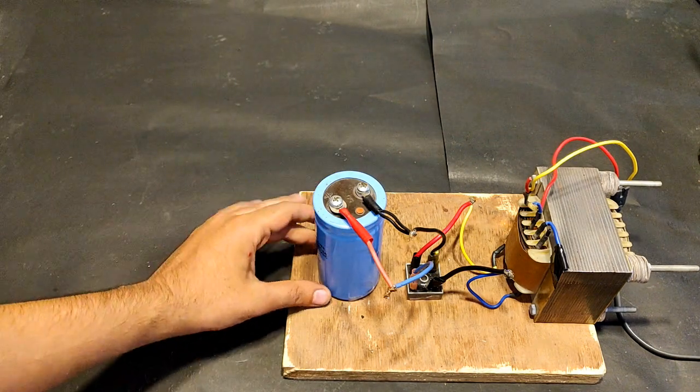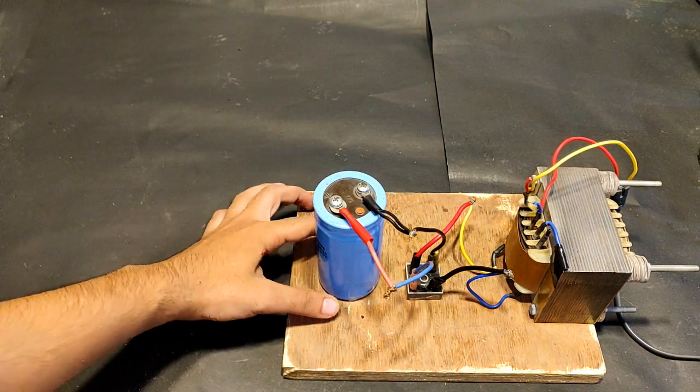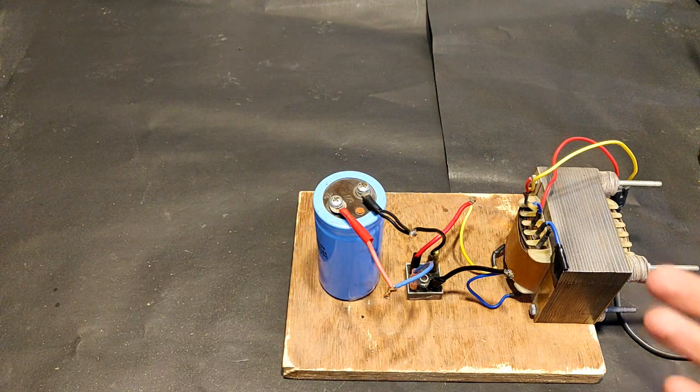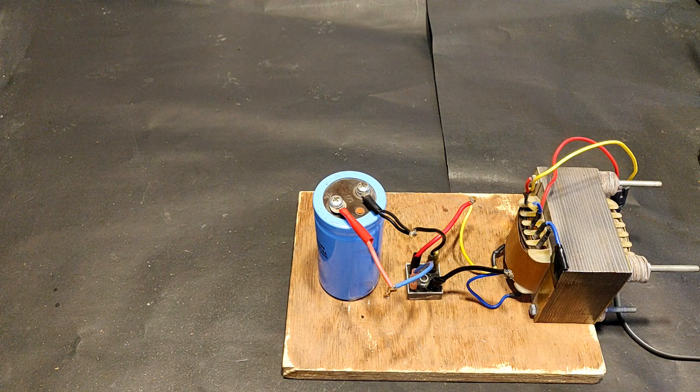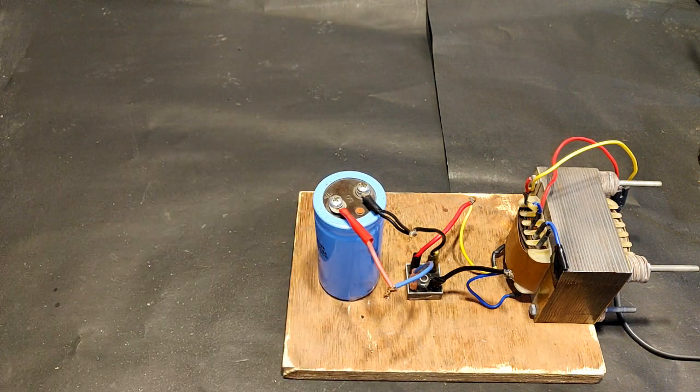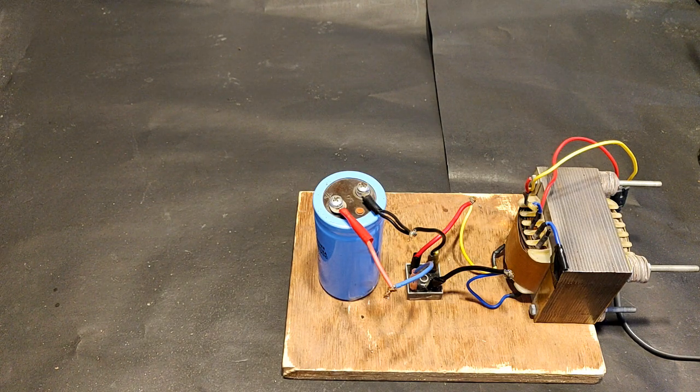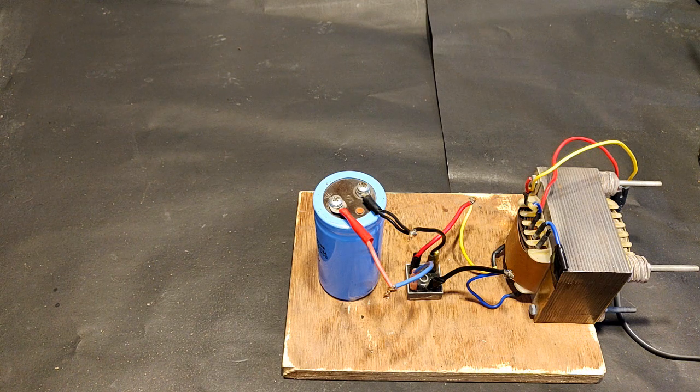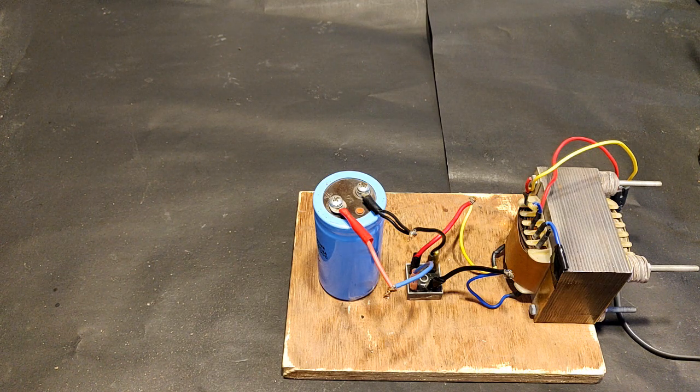One more thing guys, this capacitor that I have added to the end of the rectifier adds up to the short circuit current. So the meaning of this is that if this transformer is capable of producing or converting around 10 amperes, then this capacitor will add up to that 10 amperes and increasing its amps just for a millisecond or one second, like doubling up the amps to 20 amps or 30 amps.